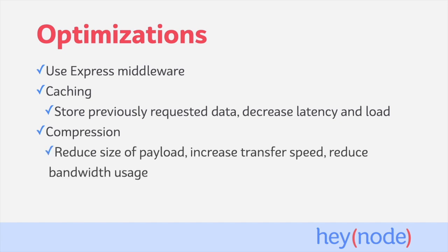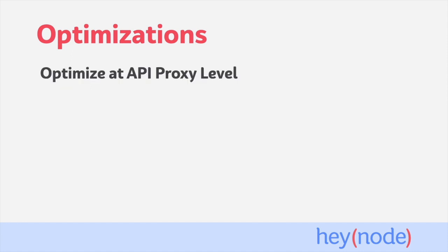We'll also be implementing compression. Compression reduces the size of a payload, which can speed up transferring the data across the network back to consumers, as well as decrease the bandwidth used by our application.